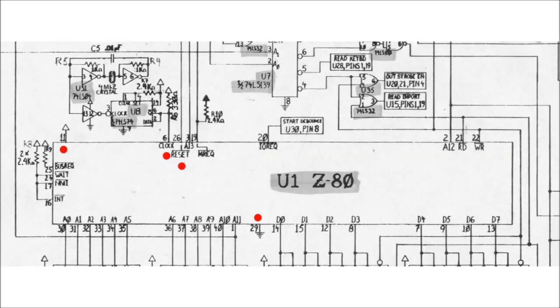Here's the schematic around the area of the CPU. It's a Z80 processor and the first thing we're going to check is to see if it's getting power, if the reset line is normal, and if the clock that drives the CPU is running.